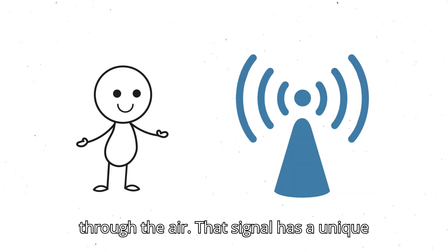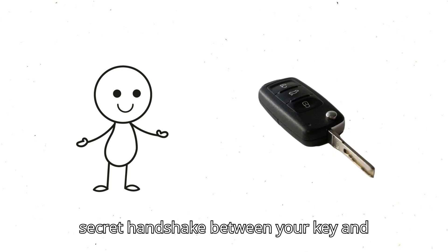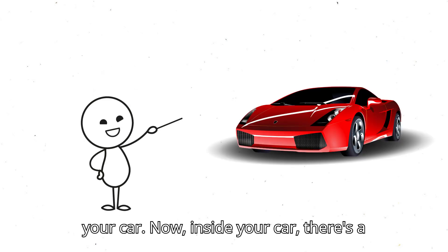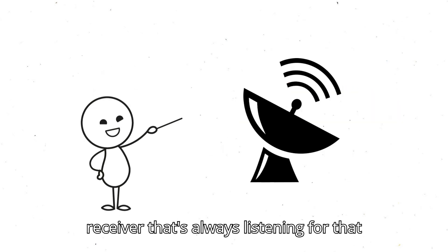That signal has a unique code attached to it, kind of like a secret handshake between your key and your car. Now, inside your car, there's a receiver that's always listening for that signal.